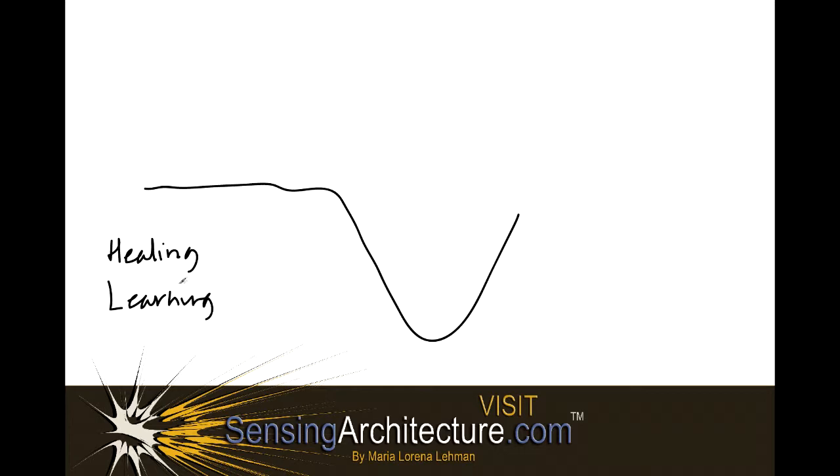This might be a typical arc where an occupant's activity is moving along in this direction and suddenly during their day they might experience a slump of some kind and suddenly their functionality, or the building's functionality rather, begins to move on a downward trend.